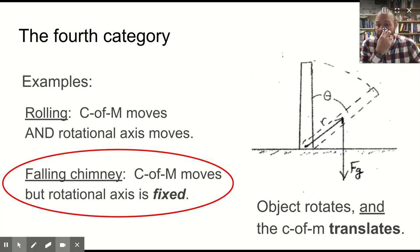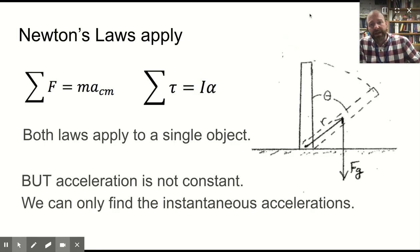These kind of problems are of the fourth category, a situation where the axis of rotation is fixed, but the center of mass does move. What this means is that the net force equals ma, and this is the acceleration of the center of mass, but there's also a net torque equals I-alpha.